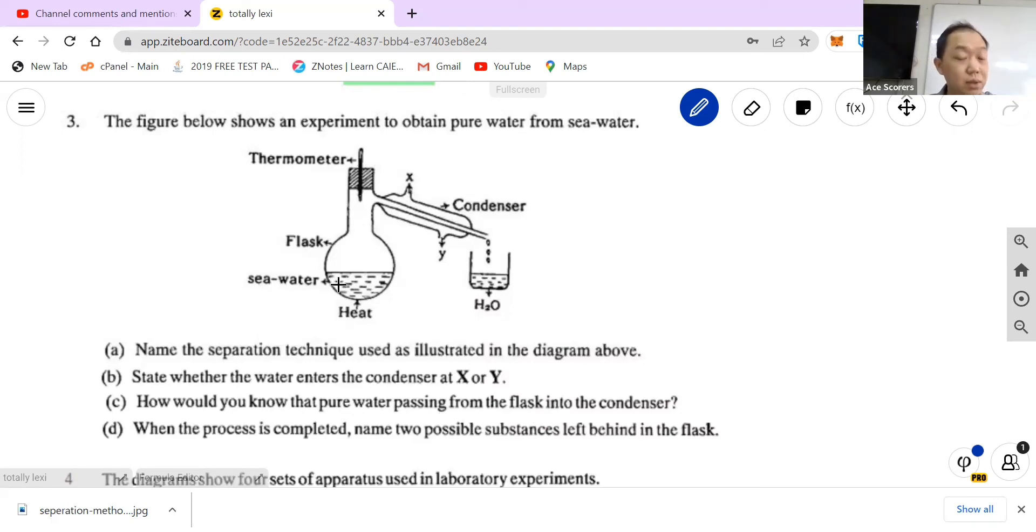How would you know that pure water is passing from the flask into the condenser? Now, because we want pure water, it's over here, it's sea water. The outcome is that we would like water, pure water H2O to be here and then whatever residue to be on this side. So you need to make sure, and how we make sure that the water is there, we look at the thermometer. Make sure that the temperature is not higher than 100 degrees Celsius, because it's exactly 100 degrees Celsius or maybe slightly higher because there are a lot of mixtures inside here.